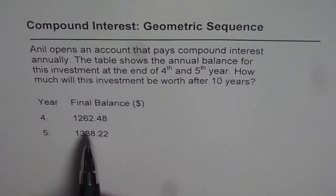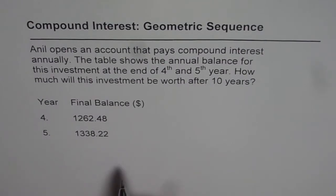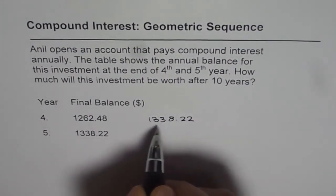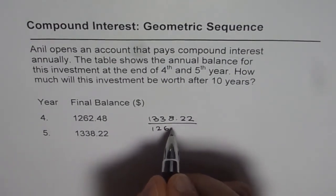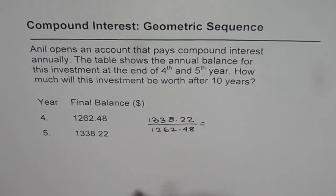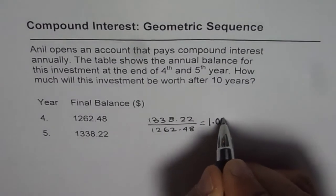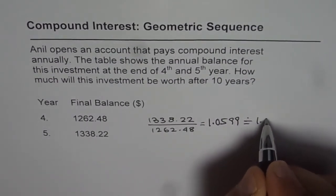Now if there is compound interest, then these terms should form part of a geometric sequence. In that case we should get a ratio from these two values and that ratio should be maintained. So let us find the ratio first: 1338.22 divided by 1262.48 gives us the rate of growth per year — the growth factor — which equals 1.0599, approximated to 1.06.